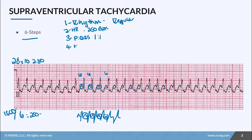Step number four, let's do the PR interval. Counting from here to here, we have about two boxes, so that would be 0.08 seconds. Remember, the normal PR interval for sinus rhythm is 0.12 to 0.20 seconds. But when your heart is beating so fast at 250 beats per minute, it takes less time from the P wave to the QRS — from the atria to the ventricles — so the PR interval is usually shorter.